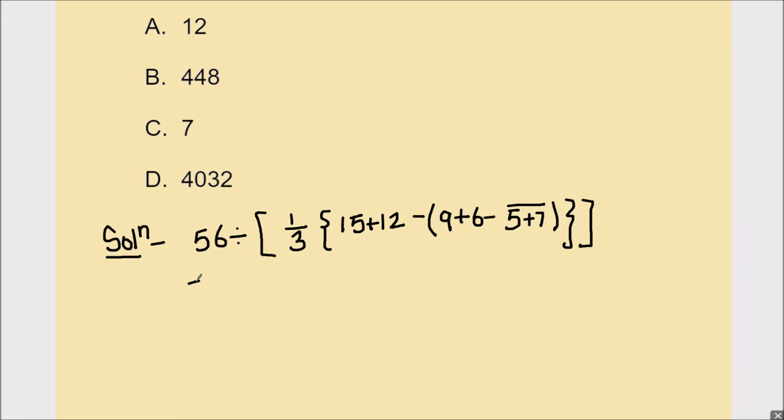Let's start with the solution. That's 56 divided by one-third, open curly brackets, 15 plus 12 minus 9 plus 6 minus, this 5 plus 7 we'll solve first. So 5 plus 7 is 12. Let's mark it. So we have solved this 5 plus 7 first, so we'll underline it.